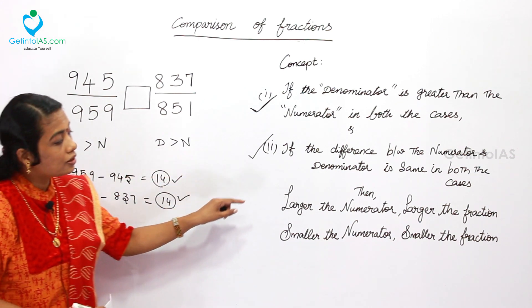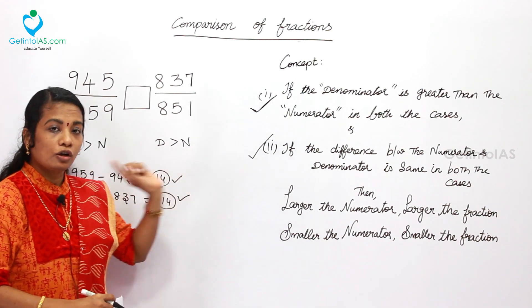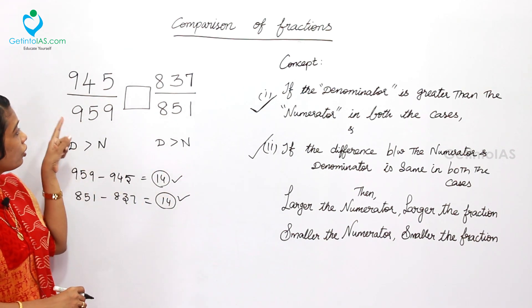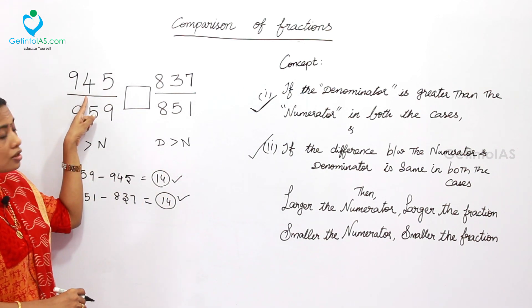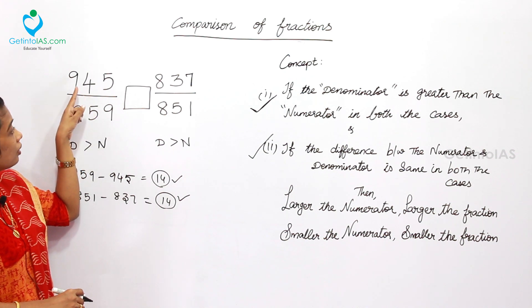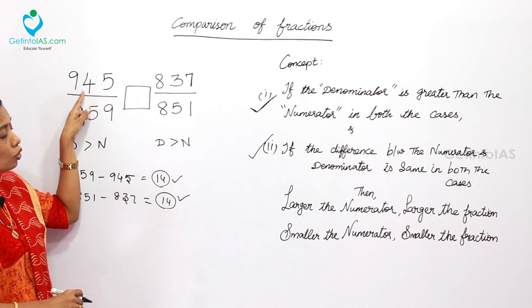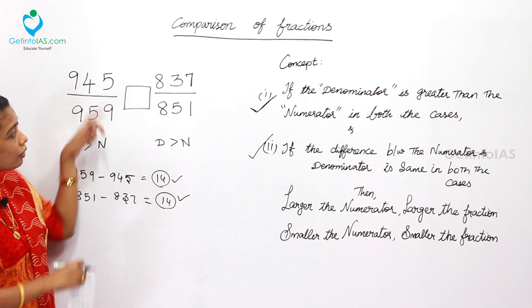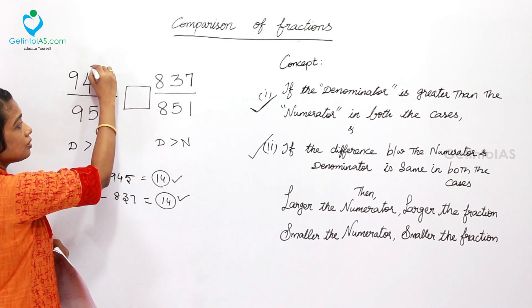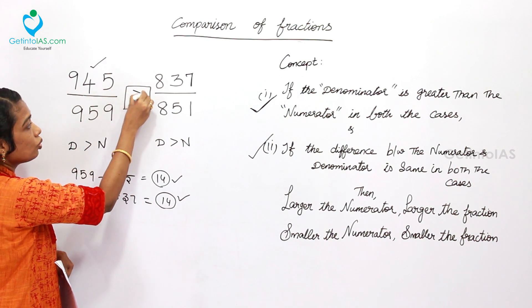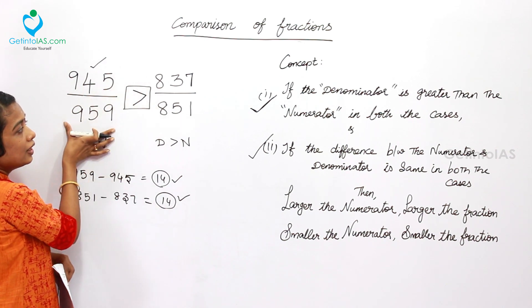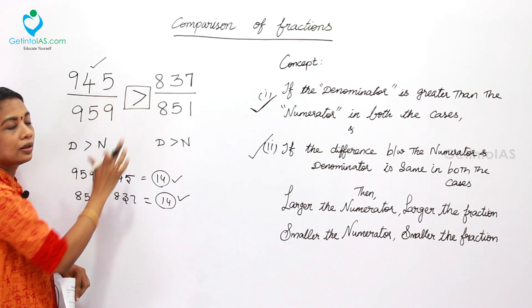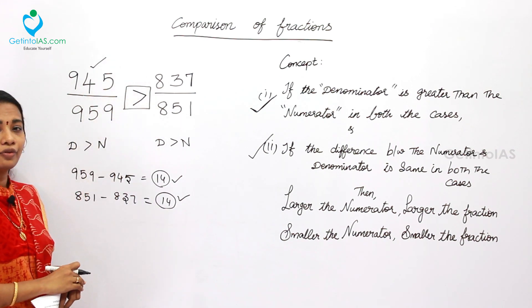Since both conditions are satisfied, we apply: larger the numerator, larger the fraction. Identifying the larger numerator, that fraction is the largest. So we can say the first number is greater than the second fraction.